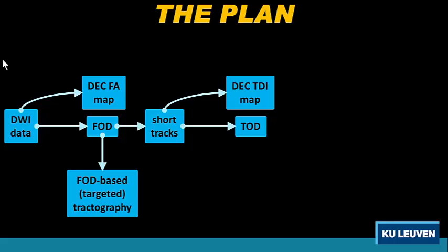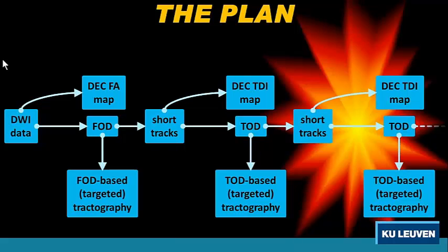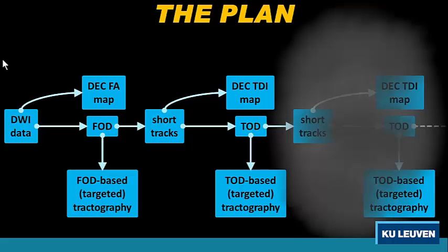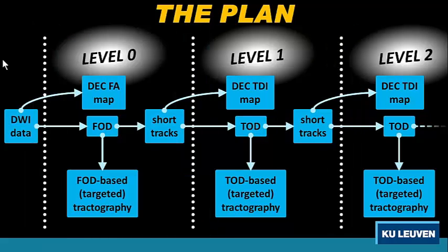Why not use these TODs again for tractography? And not only that — you can just repeat it again and again and again. So we end up with a lot of TODs, a lot of tractograms. A laser ninja jumps in and makes some structure at different levels. Now we can name everything uniquely: the FOD is at level 0, there's a TOD at level 1, a TOD at level 2, and you can just keep going.